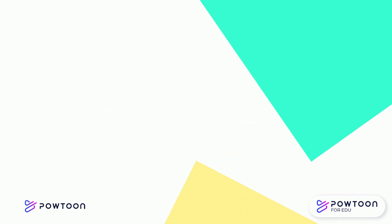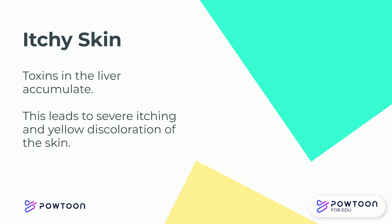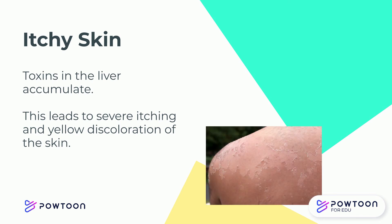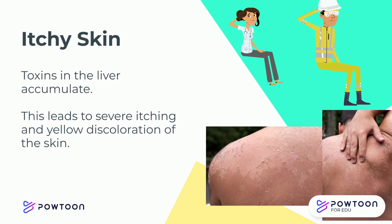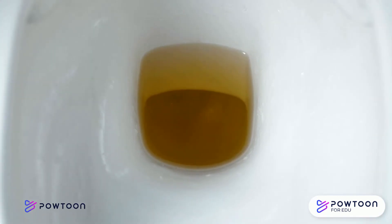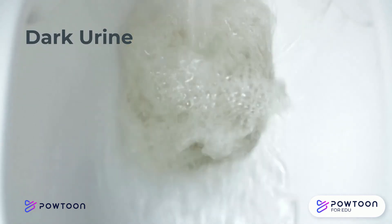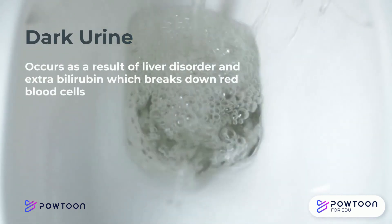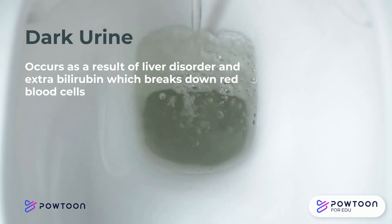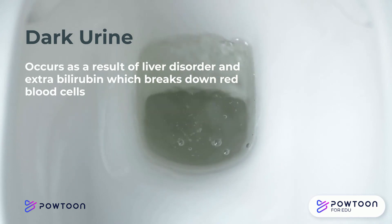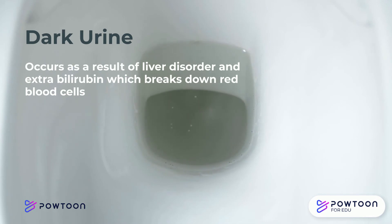In addition, you can experience itchy skin due to the inability of your liver to effectively remove toxins. The toxins continuously accumulate in your bloodstream and cause itchy skin and yellow discoloration. Finally, dark urine is another important symptom. HCV causes dark urine because the disorder of the liver causes an increase in bilirubin levels, which is a protein in charge of breaking down red blood cells. When you have high levels of bilirubin, more red blood cells are broken down than usual, which leads to a darker color in your urine.